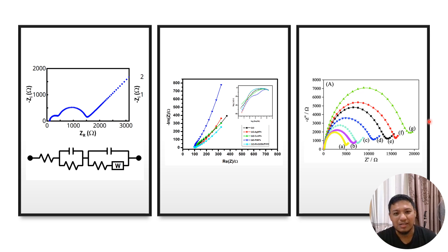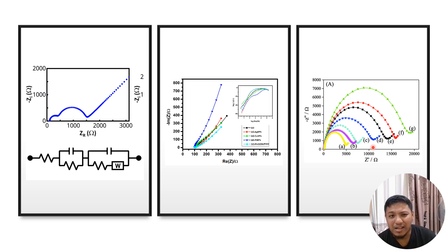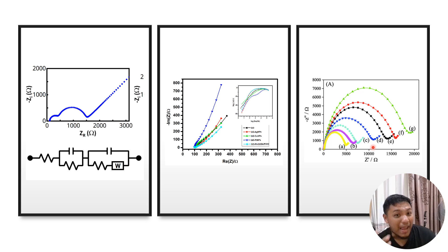In case study number three, composite A is better because it has a shorter Warburg line and the Warburg line is closer to the y-axis. In the end, it depends on your experiment and your result. To recap: just focus on two things — number one is the length of the Warburg line, and number two is the degree of your Warburg line. With these two indicators you can analyze your EIS experiment very well. That's all, thank you, bye, see you again.